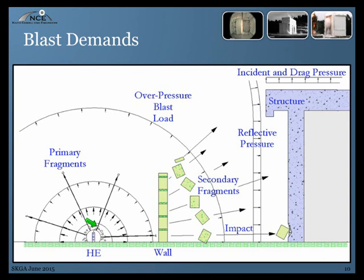These are small pieces, small mass elements, which represent the exterior of the bomb, which travel at very, very high velocities. From a structural design point, the primary fragments are not really a big issue.